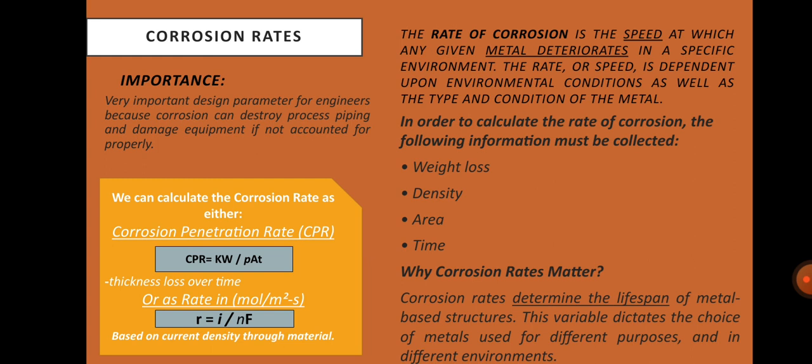In order to calculate the rate of corrosion, the following information must be collected: weight loss — the decrease in metal weight during the reference period; density — the density of the metal; area — the total initial surface area of the metal piece; and time — the length of the reference time period. Corrosion rates determine the lifespan of metal-based structures and dictate the choices of metals used for different purposes and in different environments. The rate of corrosion also determines the maintenance requirements for a structure.